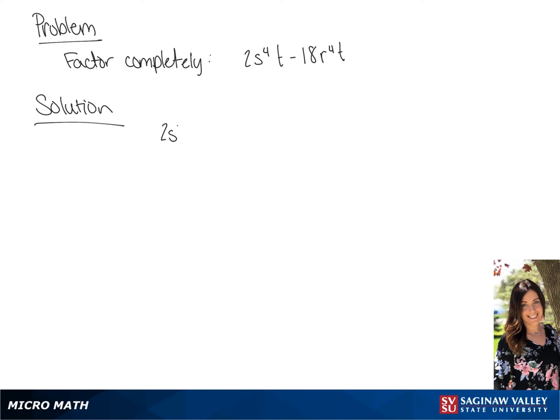We are going to factor 2s to the 4th t minus 18r to the 4th t. We're going to factor out 2t as it is a common factor for both parts of this.